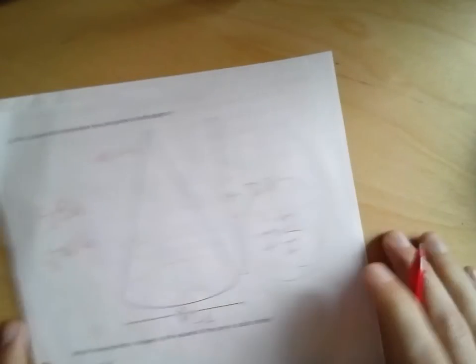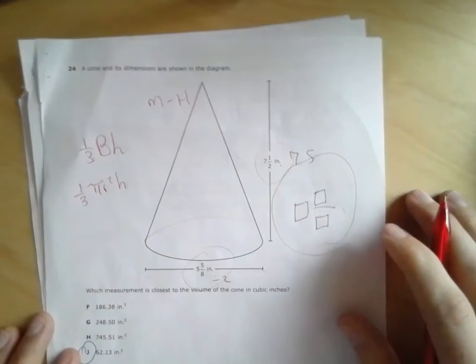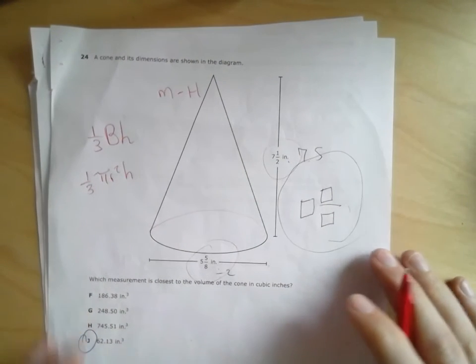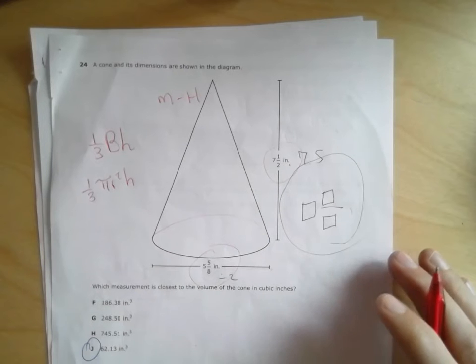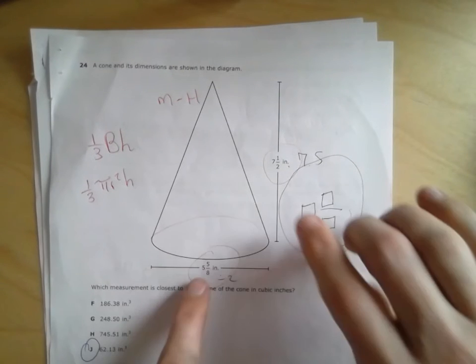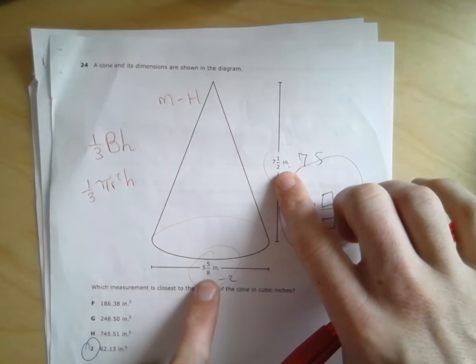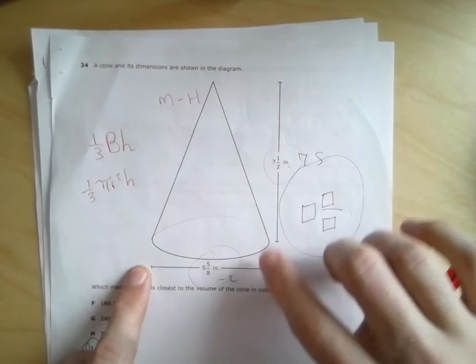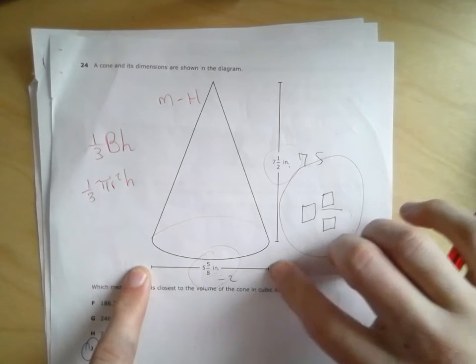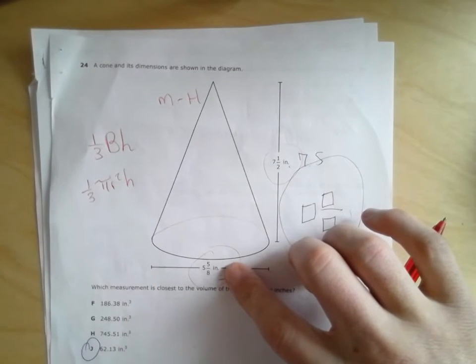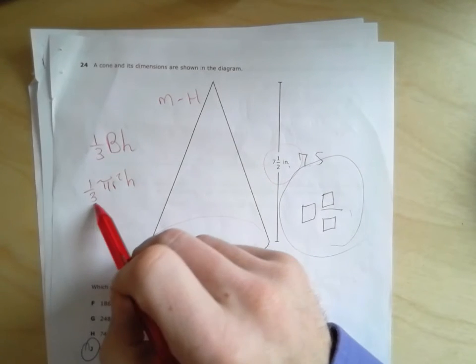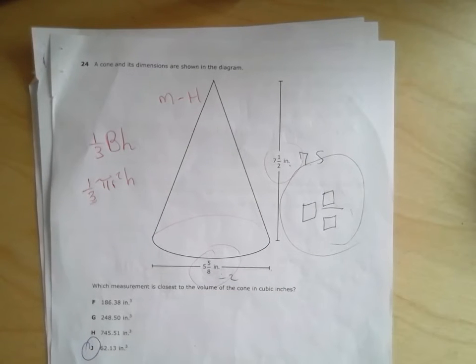I would call this one probably a medium to hard difficulty. On the one hand, it's just the volume of a cone, but on the other hand, they gave you values in mixed number, and then they gave you the diameter instead of the radius. And then it's a cone, so it's got this one-third as part of the formula. And so there's lots of opportunity to make mistakes along the way, even if you recognize the correct strategy.